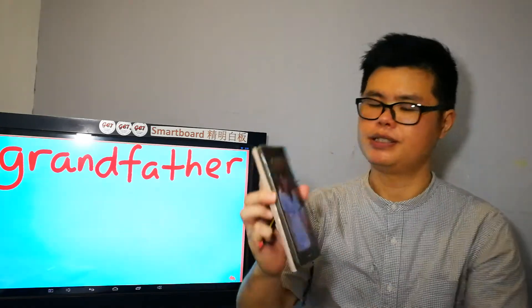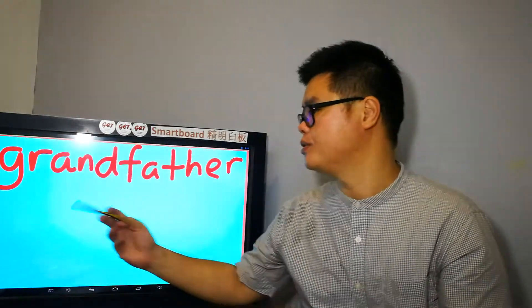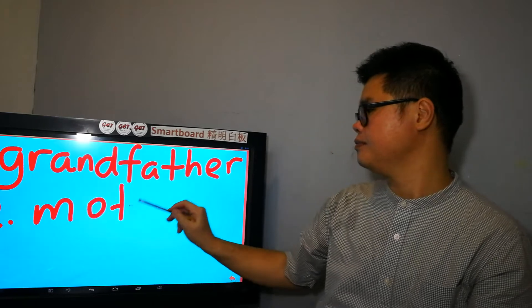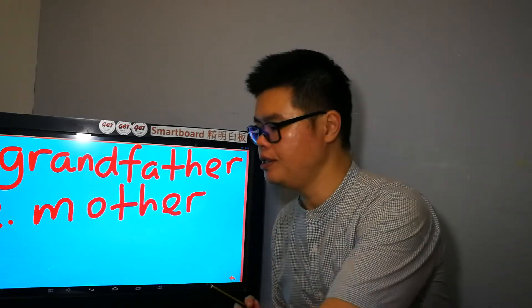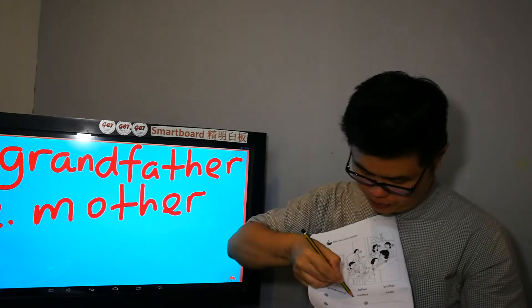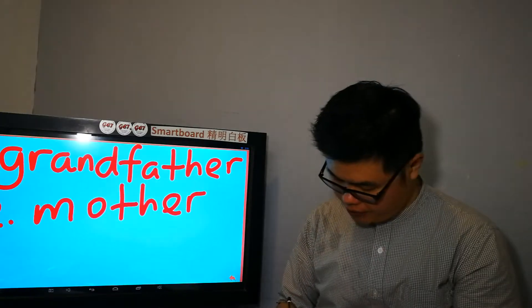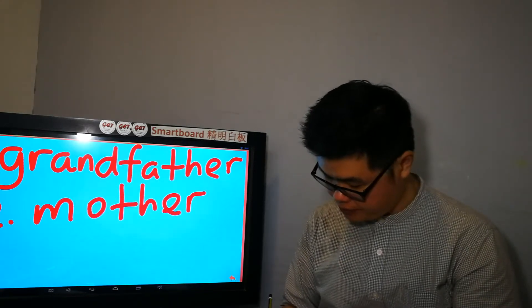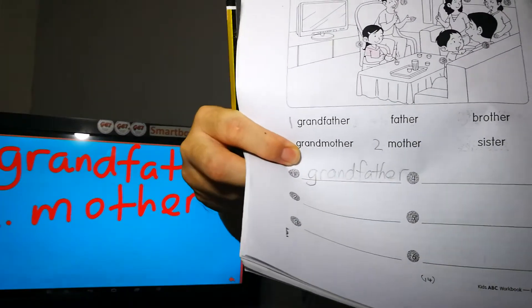Next, this is mother. Alright? Mother. Mother. Two. Number two is mother. Number two is mother. Alright? Please write number two. Number two, eh? Grandfather. Number one, you have to write very big, eh? Grandfather. Big and clear. Good. The words.